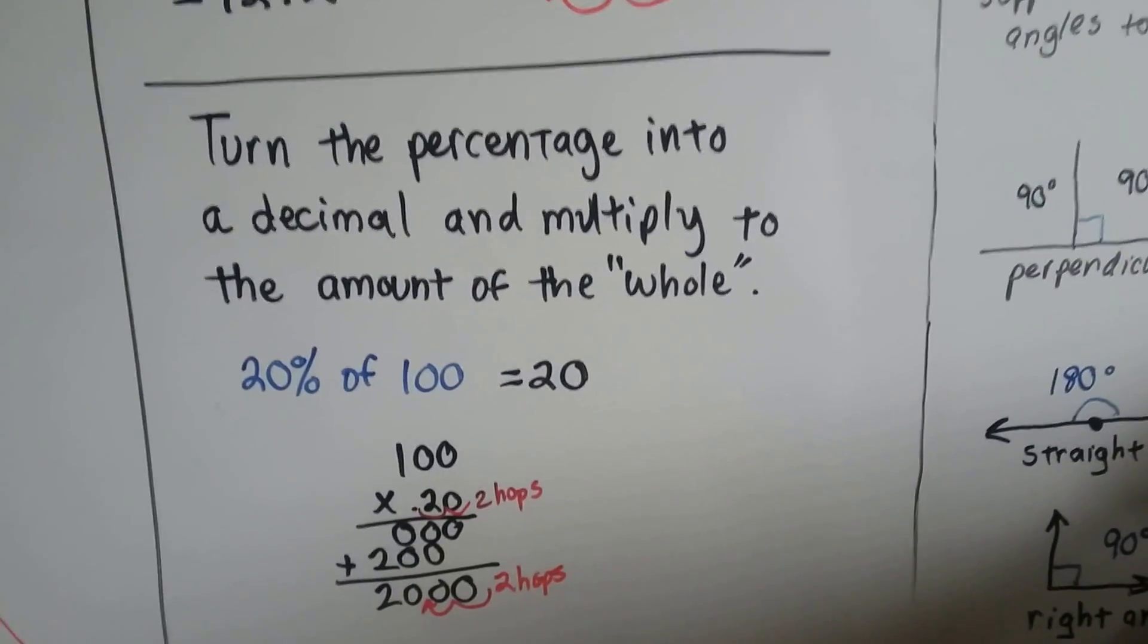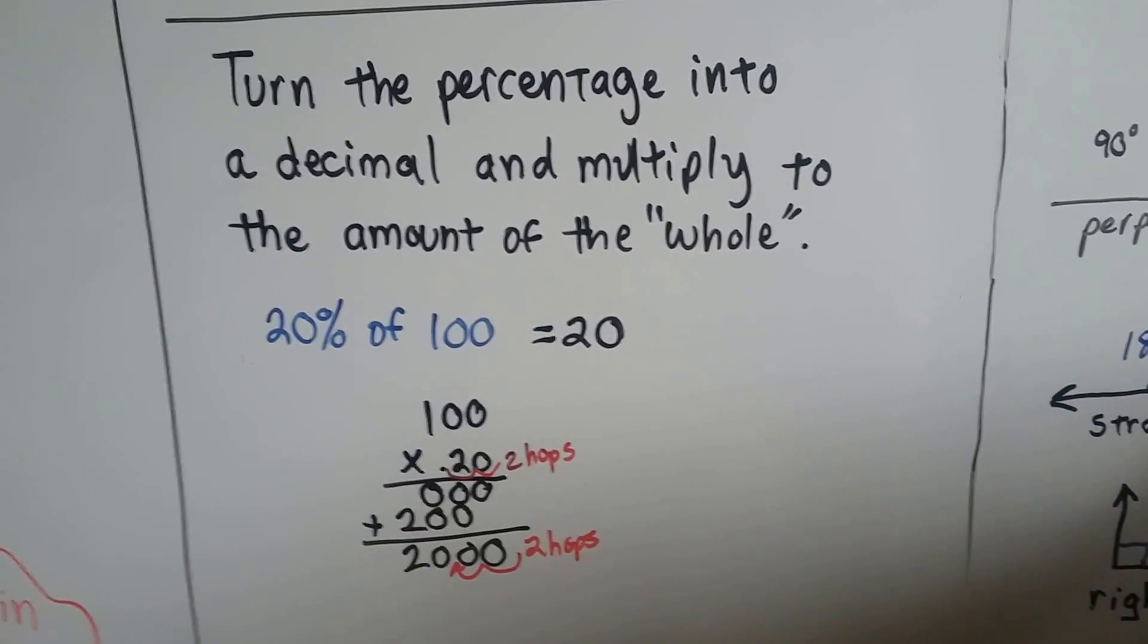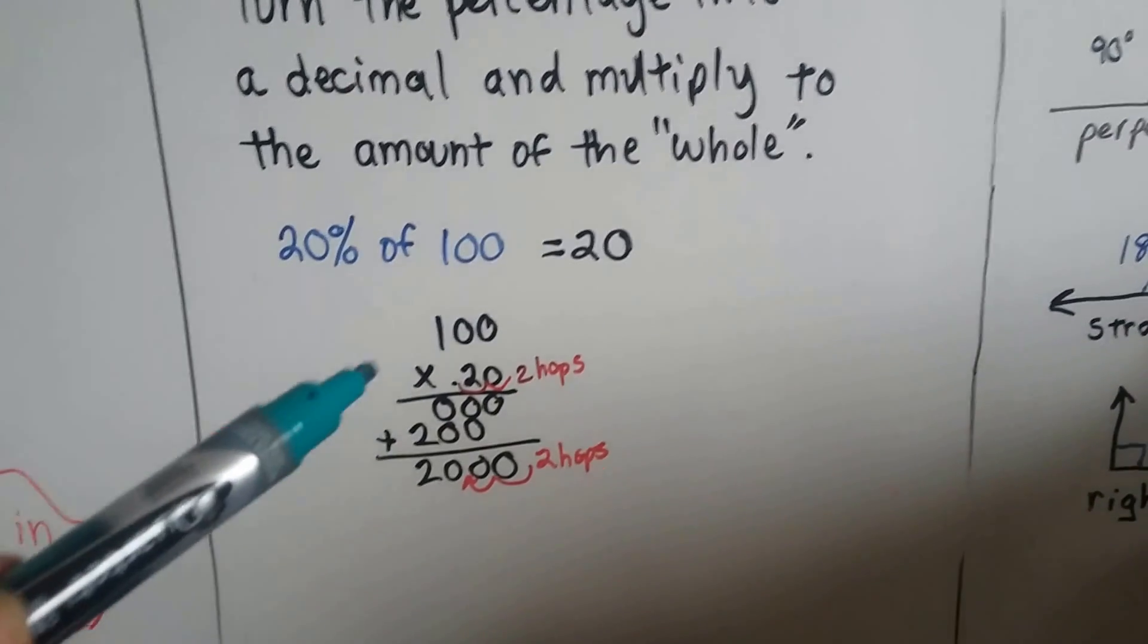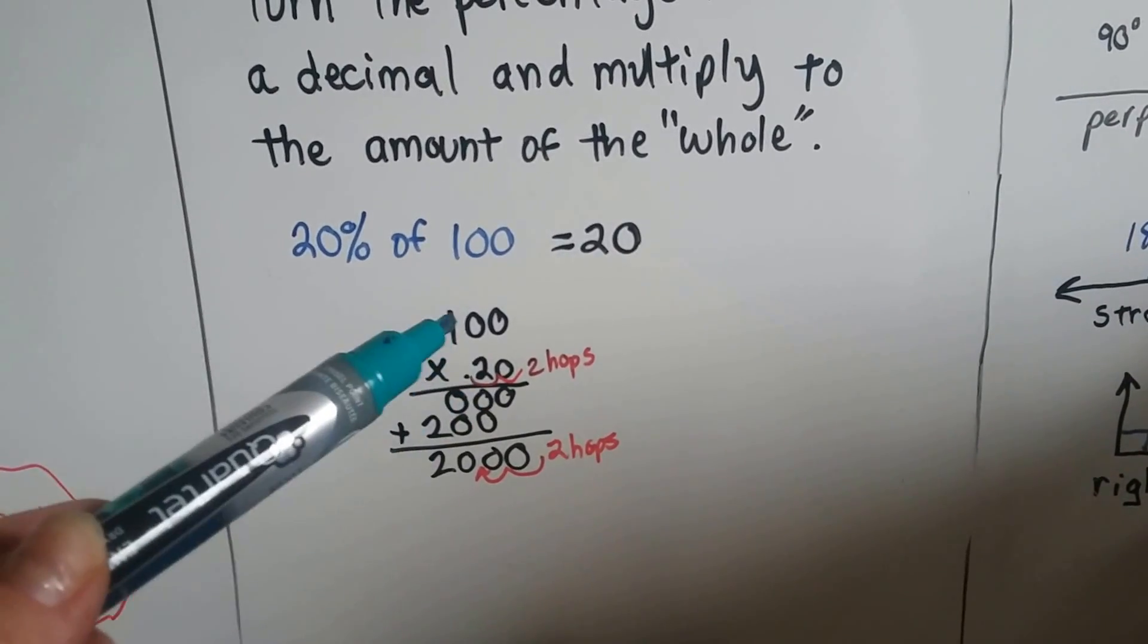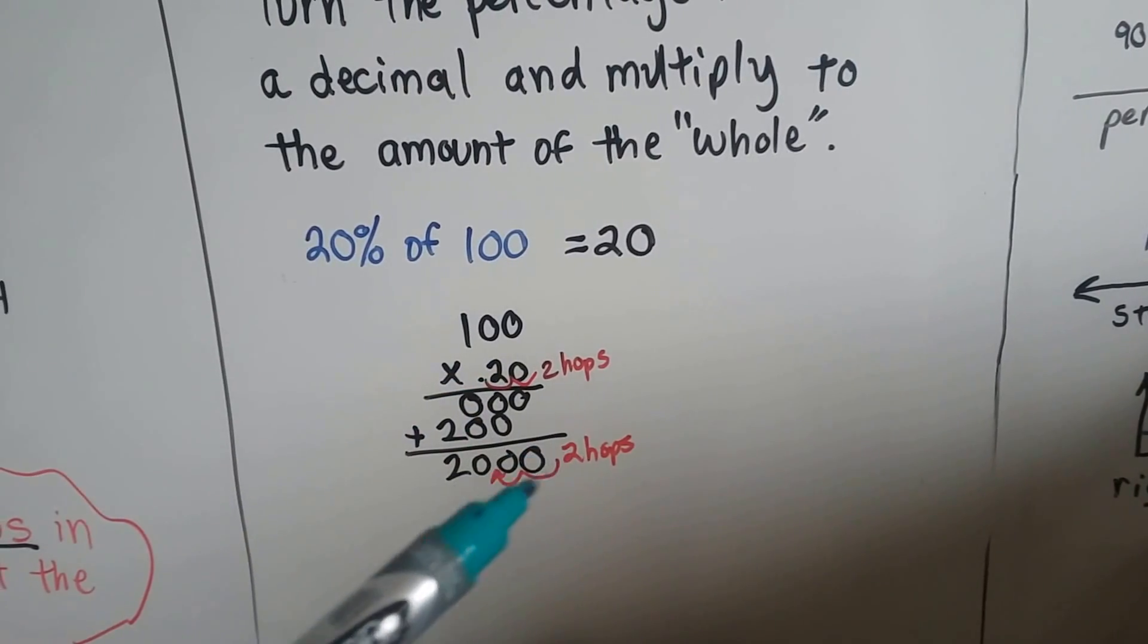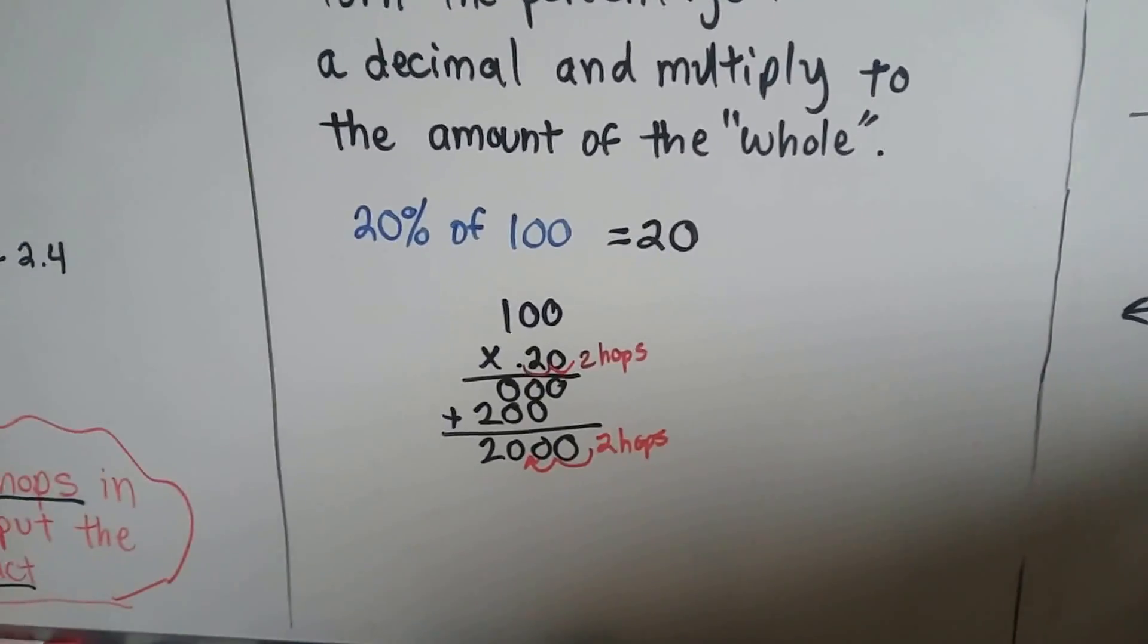So you can turn the percentage into a decimal and multiply to the amount of the whole. 20% of 100. You multiply .20 times 100. You count the hops in the equation. You put that many in the product. And our answer is 20.